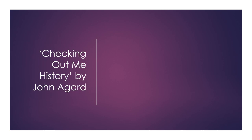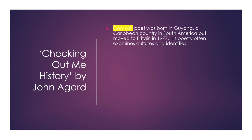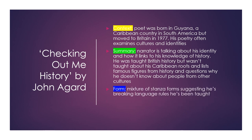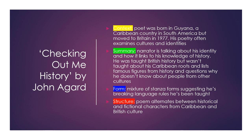Checking Out Me History by John Agard. The poet was born in Guyana, a Caribbean country in South America, but moved to Britain in 1977. His poetry often examines cultures and identities. The narrator talks about his identity and how it links to his knowledge of history. He was taught British history but wasn't taught about his Caribbean roots, and lists famous figures from history, questioning why he doesn't know about people from other cultures. The form is a mixture of stanza forms, suggesting he's breaking the language rules he's been taught. The poem alternates between historical and fictional characters from Caribbean and British culture.